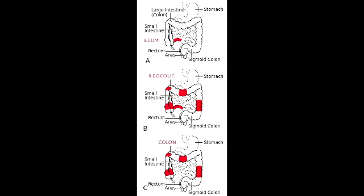In what condition do skip lesions occur? Skip lesions occur in Crohn's disease. Skip lesions are alternating areas of transmural inflammation followed by normal colon, and this pattern keeps alternating.